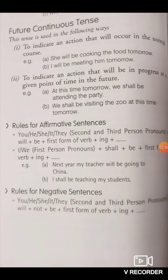Now, the rules for affirmative sentences: for second and third person pronouns — you, he, she, it, they — the structure is: subject + will + be + first form of verb + ing. That is the continuous tense. For first person pronouns — I and we — the structure is: subject + shall + be + first form of verb + ing. For example: 'Next year my teacher will be going to China.' 'I shall be teaching my students tomorrow.'